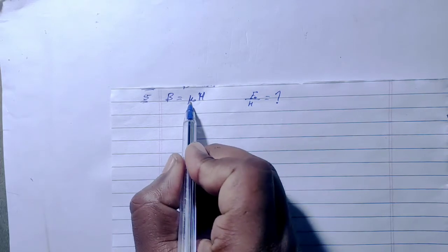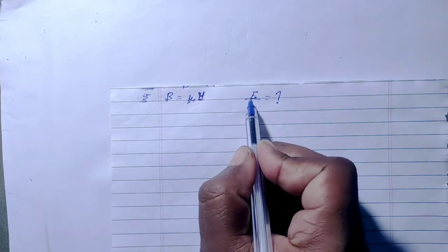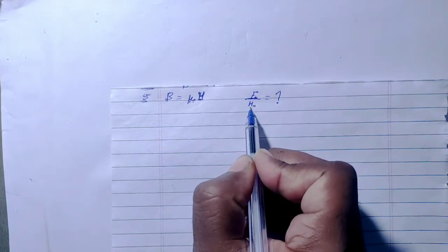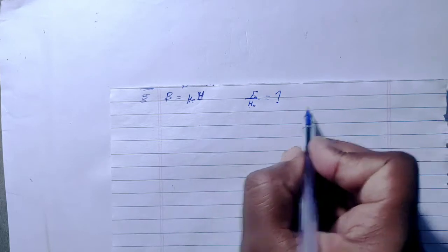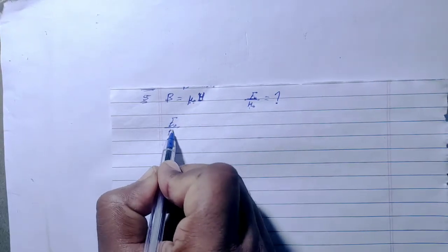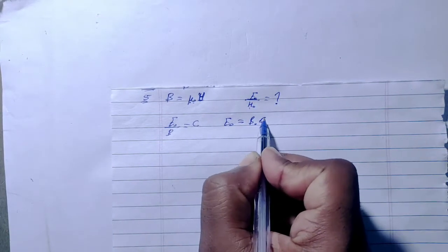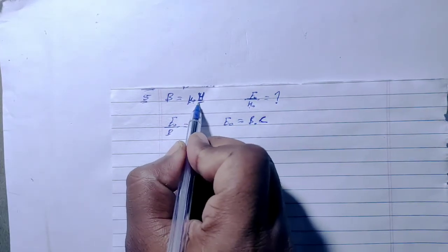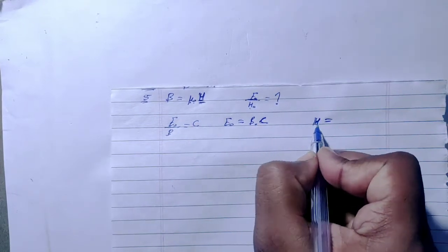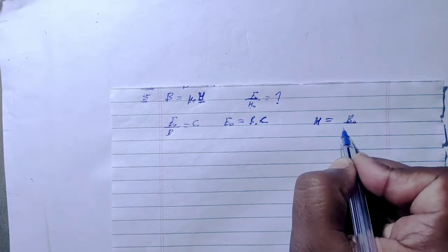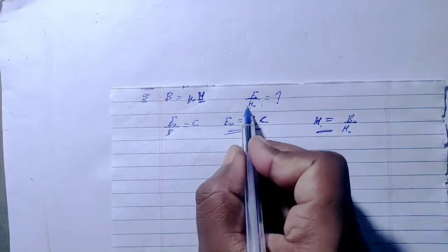So what do we need to show? Magnetic field B equals magnetic permeability mu times magnetic intensity H. Now we need to find the ratio of electric field E upon magnetic intensity H. We know that electric field upon magnetic field gives the speed of light.